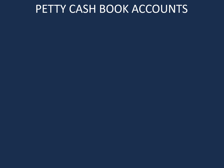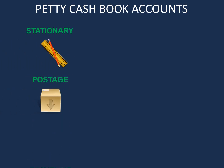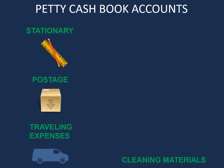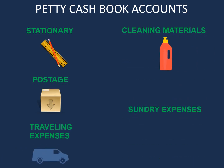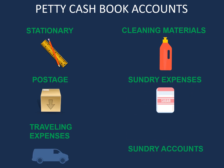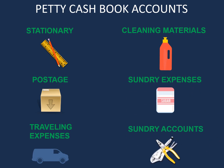There are various accounts in our petty cash book: stationery, postage, travelling expenses, cleaning materials, sundry expenses, and sundry accounts. When recording transactions in our petty cash book, we need to record them under these different types of accounts. Now let's go ahead and look at an example and record transactions in our petty cash book.